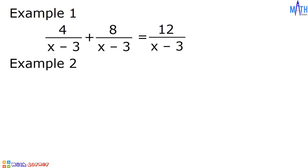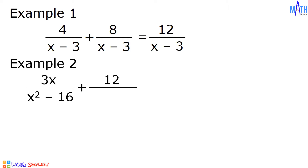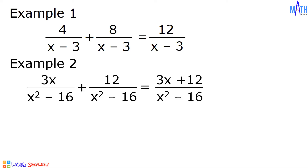Example number 2: 3x over x squared minus 16 plus 12 over x squared minus 16. In the numerator, we have 3x plus 12. And we will copy the common denominator, x squared minus 16.